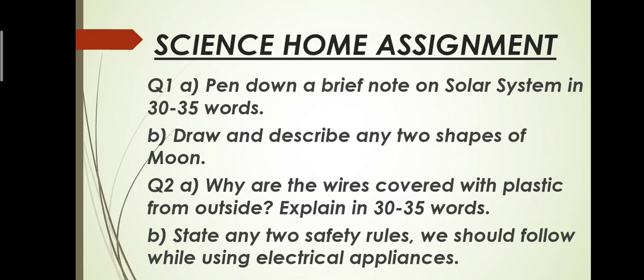Moving on towards the second question A part, why are the wires covered with plastic from outside? Explain in 30 to 35 words. Open your science book page number 134, there is a topic electricity cannot flow through all things. The wires are covered from outside with plastic so it can save us from any electrical shock. The current is flowing through the wire inside, so it is very important to cover that wire from outside with the plastic.